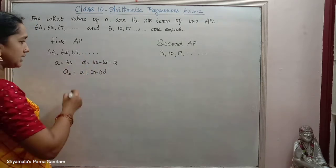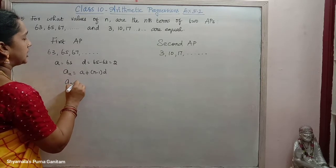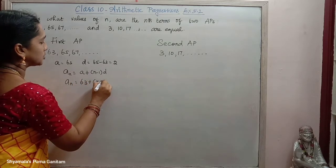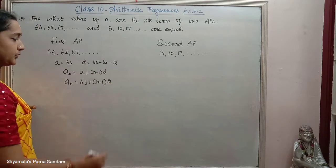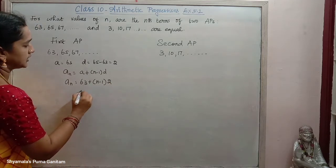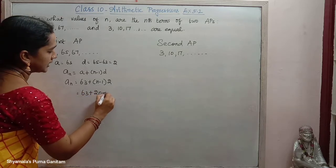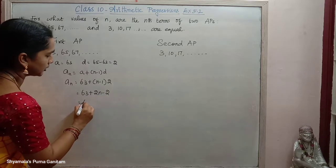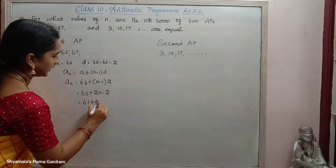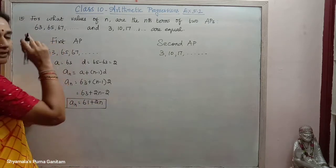We know that AN is equal to A plus N minus 1 into D. So AN equals 63 plus N minus 1 into 2. This simplifies to 63 plus 2N minus 2, which equals 61 plus 2N. So for the 1st AP, AN is equal to 61 plus 2N.